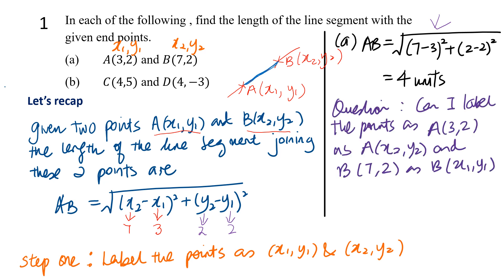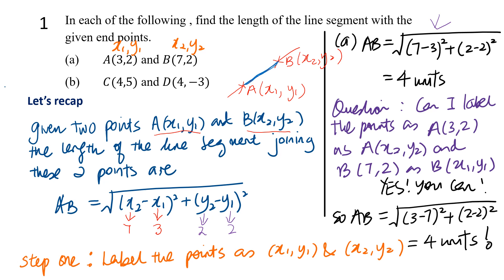There's a question I'd like you to think about: can I label point A as (x2, y2) and point B as (x1, y1) — the reverse of what I did? The answer is yes, you can, because you'll still get the same answer.